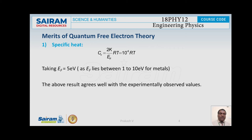According to quantum free electron theory, the specific heat Cv equals (2K/EF) × RT. Since the value of Fermi energy for all metals ranges from 1 to 10 electron volts, the value of 2K/EF is approximately equal to 10⁻⁴. That is why Cv equals 10⁻⁴ RT, which is in experimental agreement. This is considered a success of quantum free electron theory with respect to specific heat.